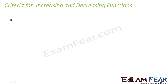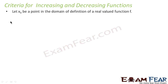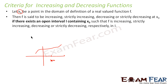Now let's understand the criteria for increasing and decreasing functions. If x0 is a point in the domain of a function, then f is said to be increasing, strictly increasing, decreasing, or strictly decreasing at x0 if there exists an open interval containing x0 such that the function is increasing, strictly increasing, decreasing, or strictly decreasing in that interval.